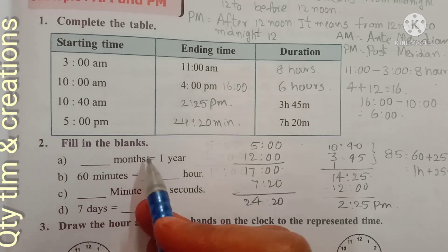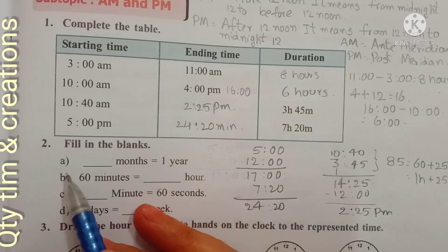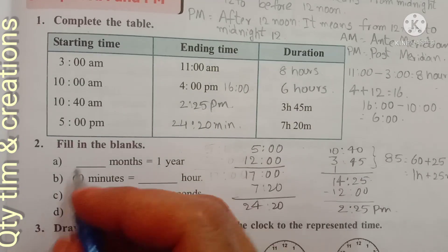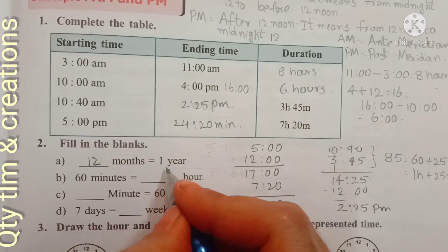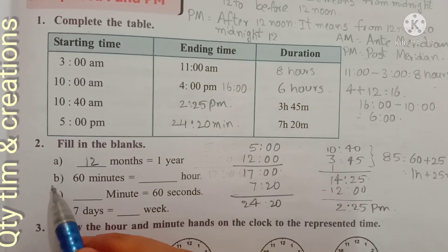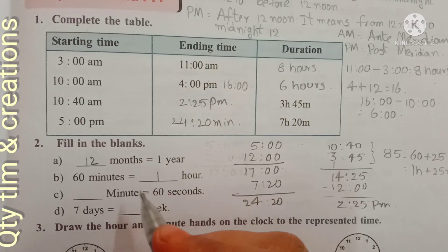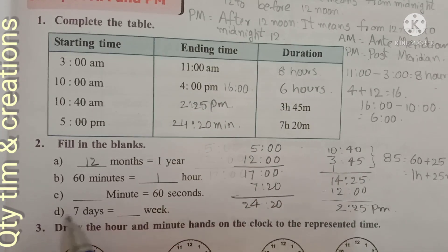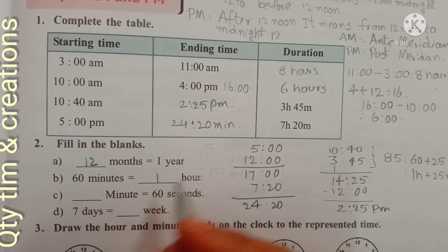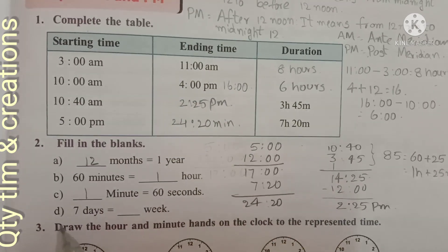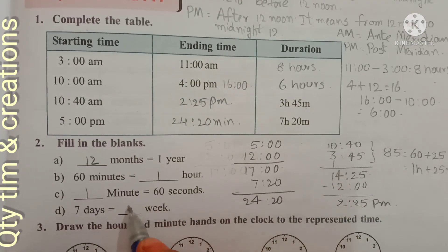Next, filling in the blanks. A: 12 months equals 1 year. B: 60 minutes equals 1 hour. C: 60 seconds equals 1 minute. D: 7 days equals 1 week.